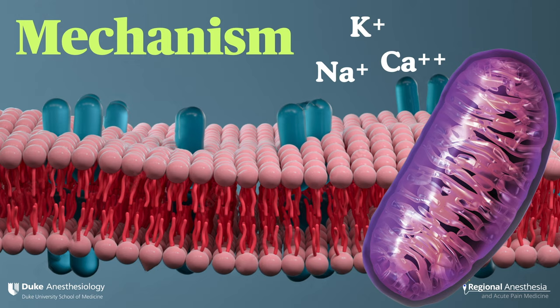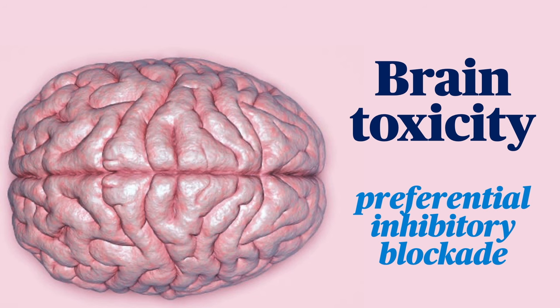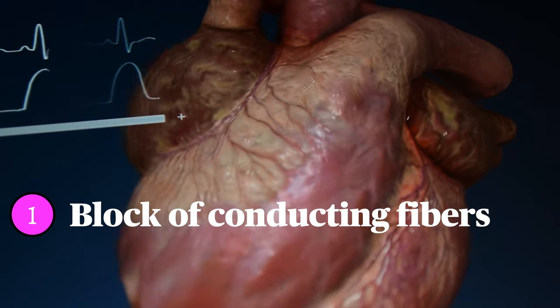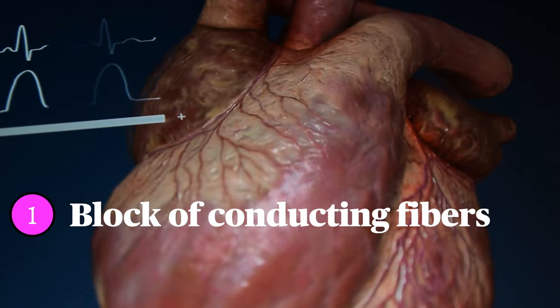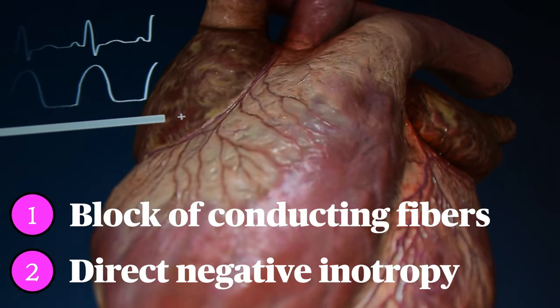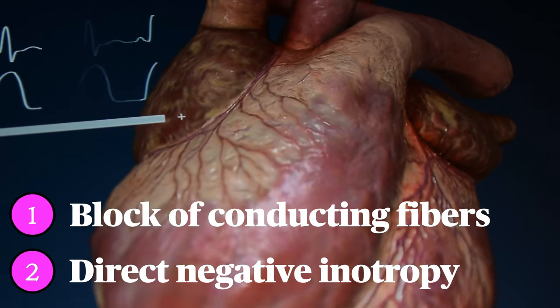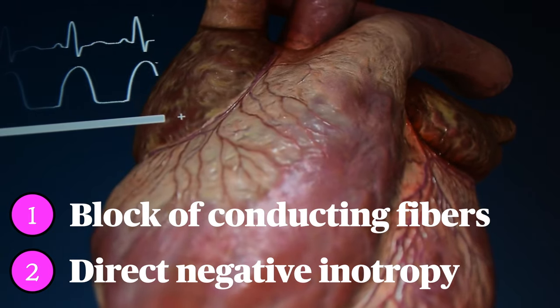In the brain, high local anesthetic levels first provoke blockade of inhibitory neurons in the cortex, leaving excitatory pathways unrestrained — explaining the twitching, hallucinations, and seizures of neurotoxicity. At higher plasma levels, excitatory neurons get blocked too, resulting in CNS depression and coma. In the heart, sodium channel blockade of conducting fibers provokes bradycardia or re-entrant tachyarrhythmias, with a direct myocardial depressant effect from calcium channel blockade and interference with the myocardial sodium-calcium pump.